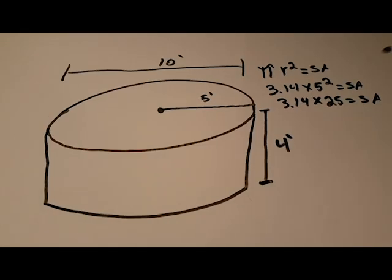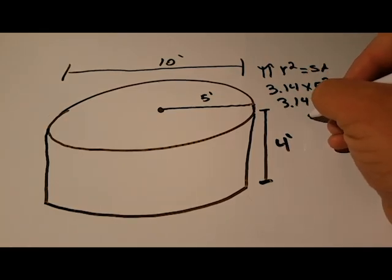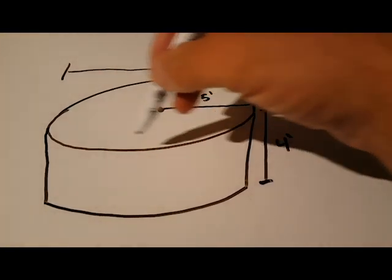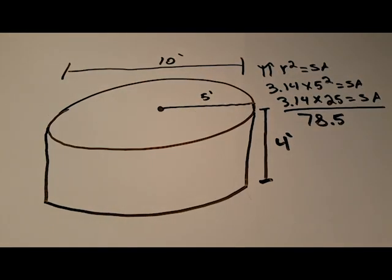That equals our surface area. The number we get when we multiply π by the radius squared is 78.5, and that's our surface area of the top of this pool.